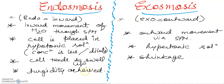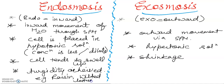जैसे कि endosmosis के example में — अगर आप resin को water में soak करें तो वहाँ पर swelling आ जाएगी। और wilted plant leaves को cold water में रखेंगे तो वहाँ पर भी endosmosis होगी। So examples are: resin swelling in water, and wilted plant leaves in cold water — cell turgidity maintain करेगी।